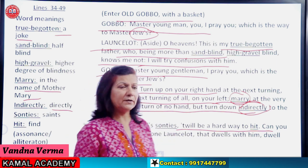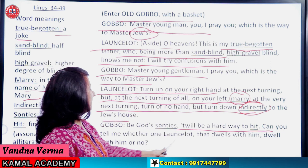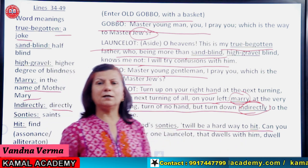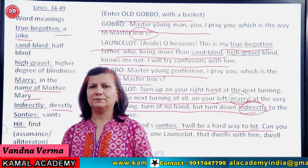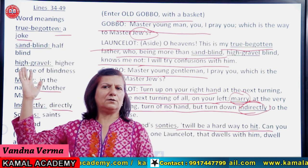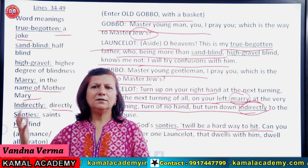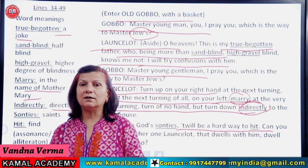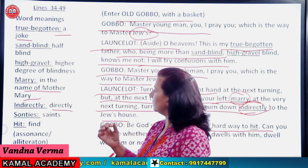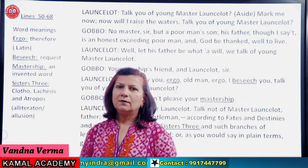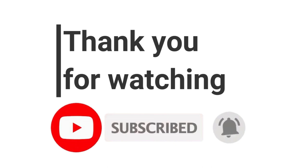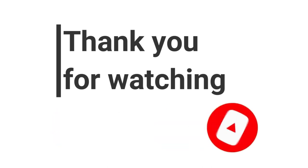Old Gobbo says: 'Can you tell me whether one Launcelot that dwells with him — dwell with him or no?' He says, chalo itna toh bata do, ek Launcelot — na ka, one Launcelot — kya woh abhi bhi wahan hai ya nahi? Does he dwell with him, live with him, work for him or no? Please tell me.